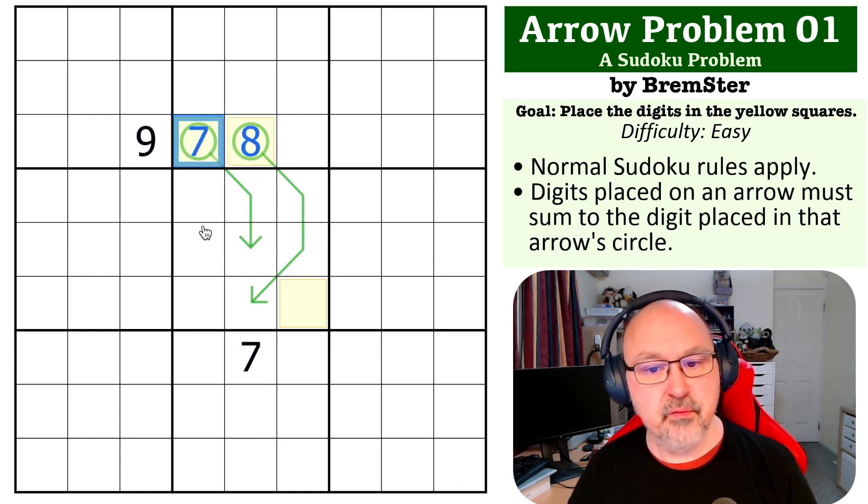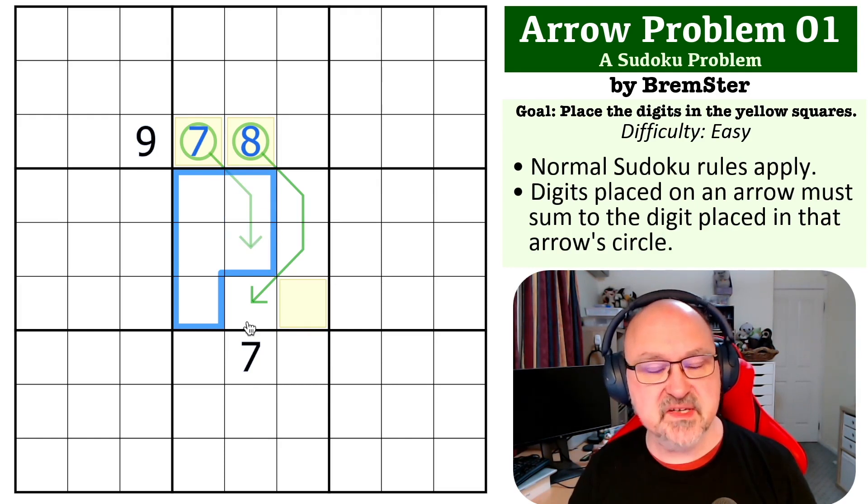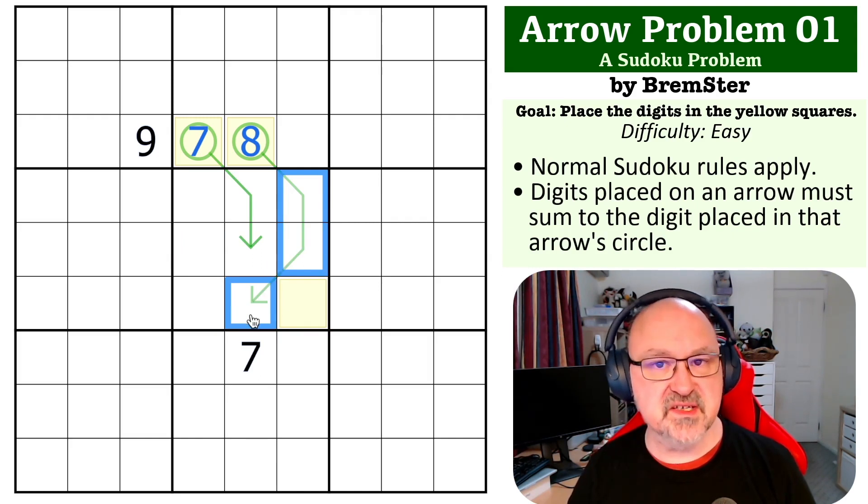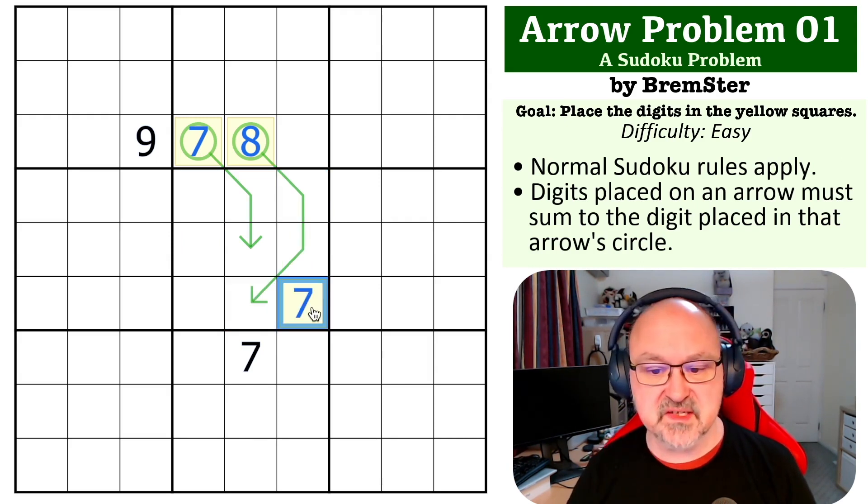Now the question we need to ask ourselves is what is this cell? Well, we cannot put a seven in here. We can't put a seven on a seven arrow. And if we were to put a seven onto an eight arrow, it would have to go with two digits, or on a three cell arrow, it would have to go with two digits, sum to one, which is not going to work. So this becomes a seven.